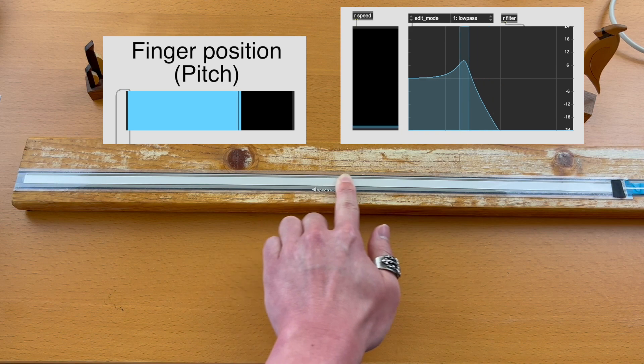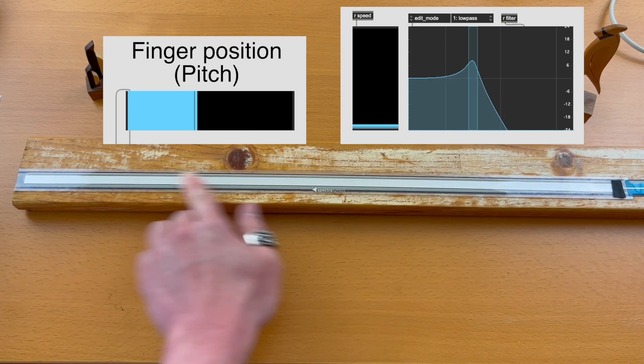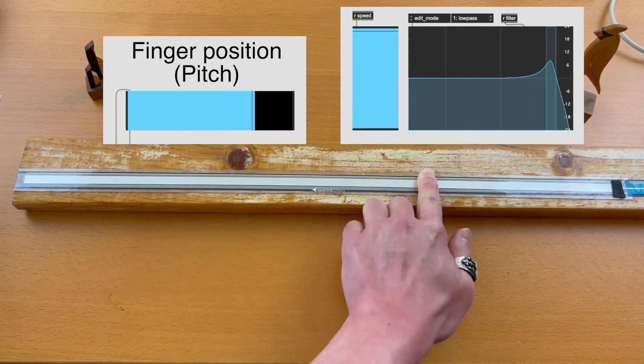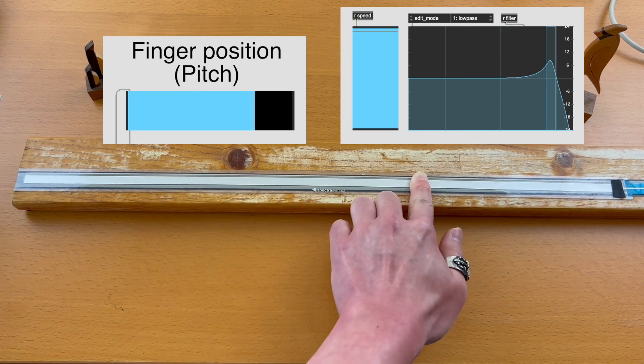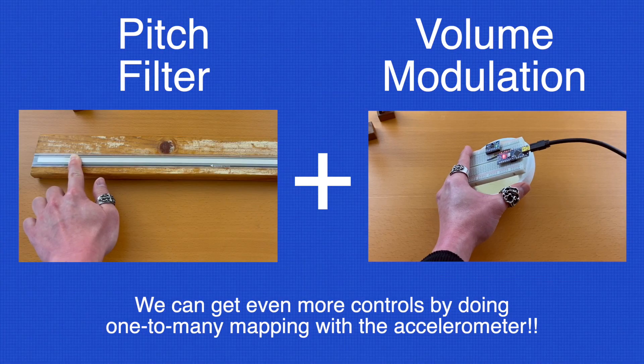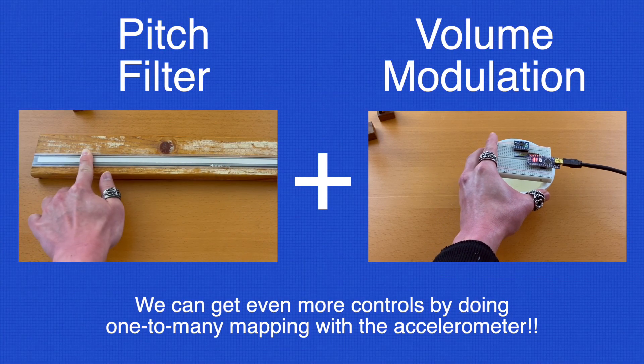Awesome! Let's listen to the speed being mapped to filter parameter instead of volume.